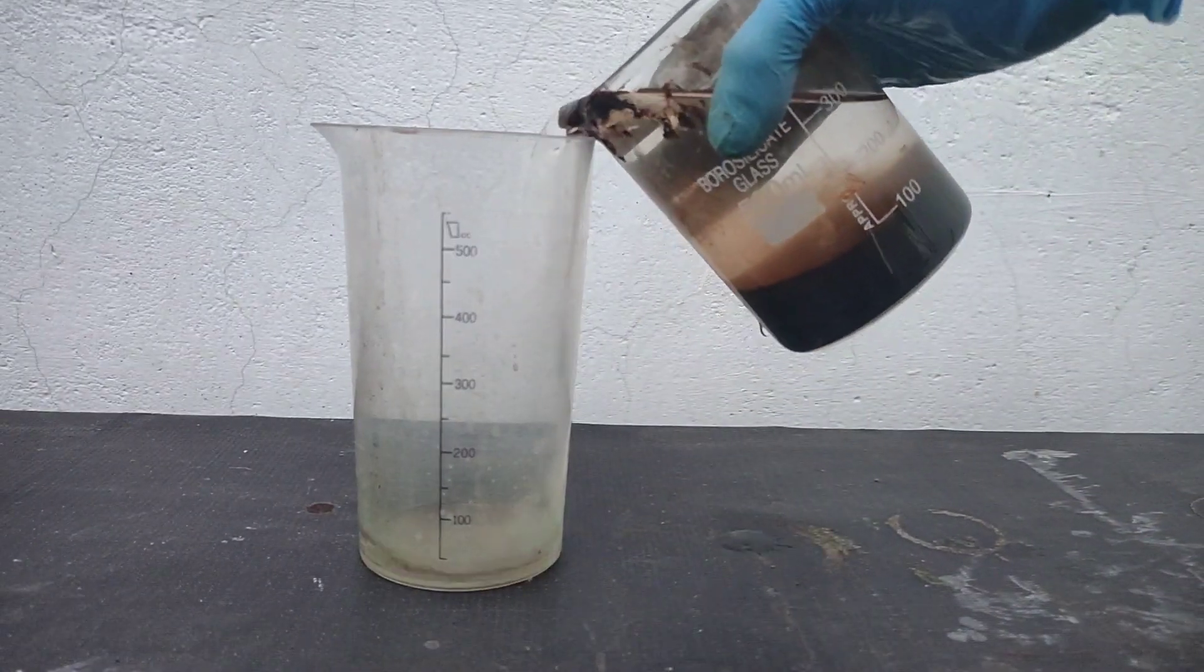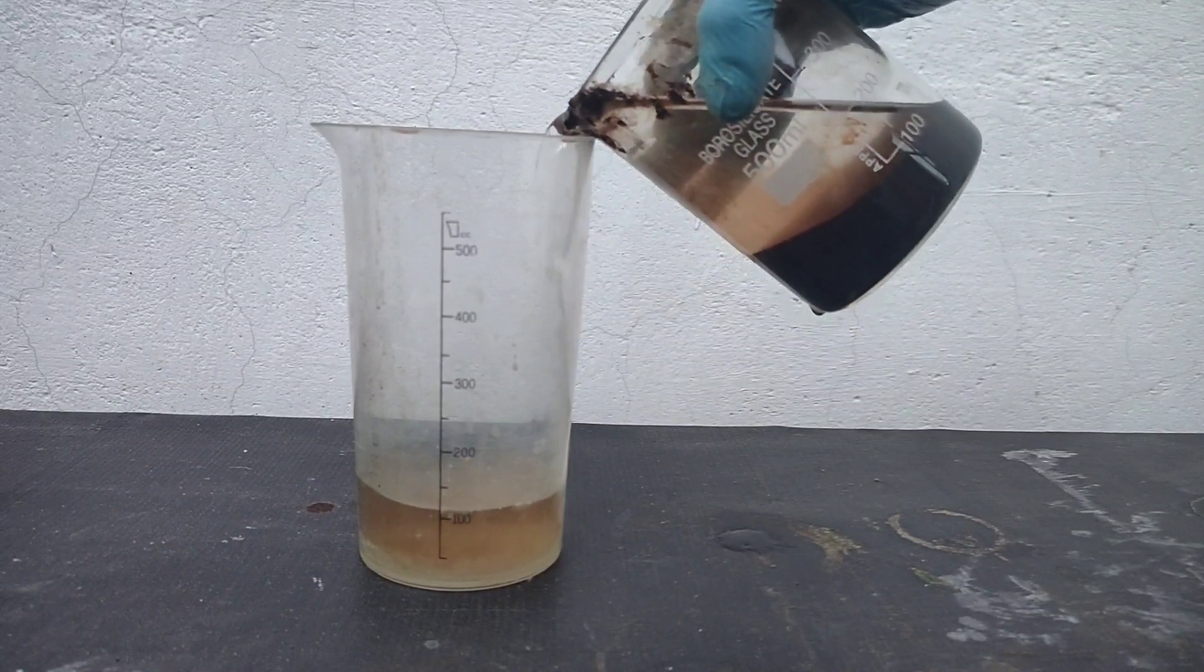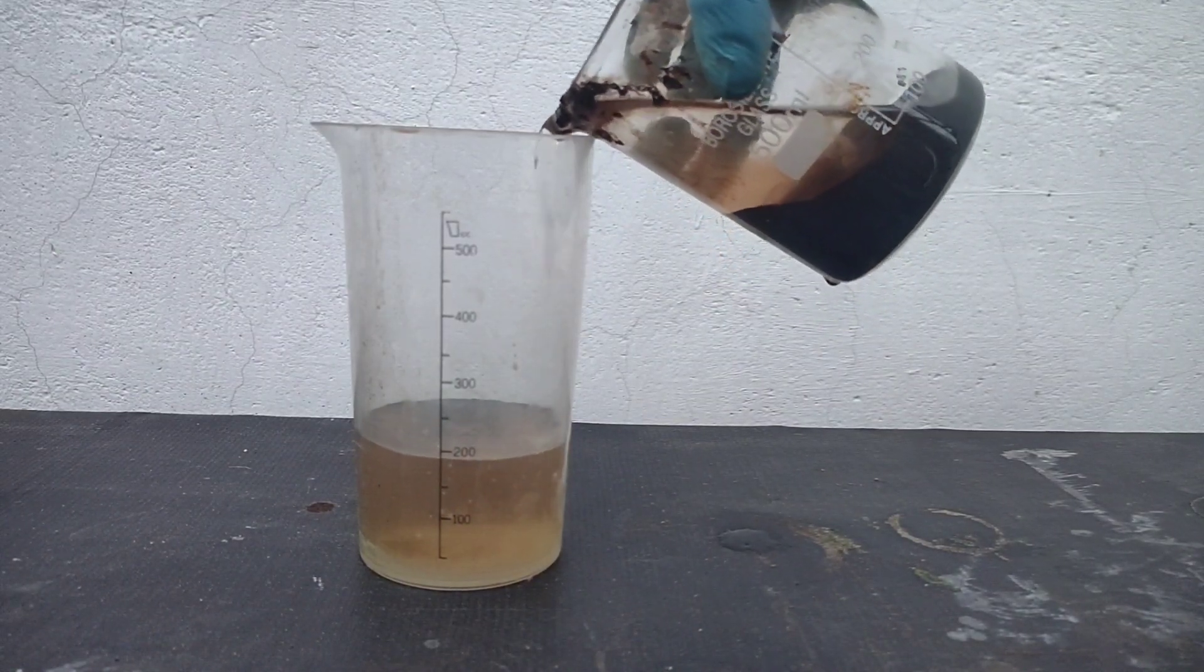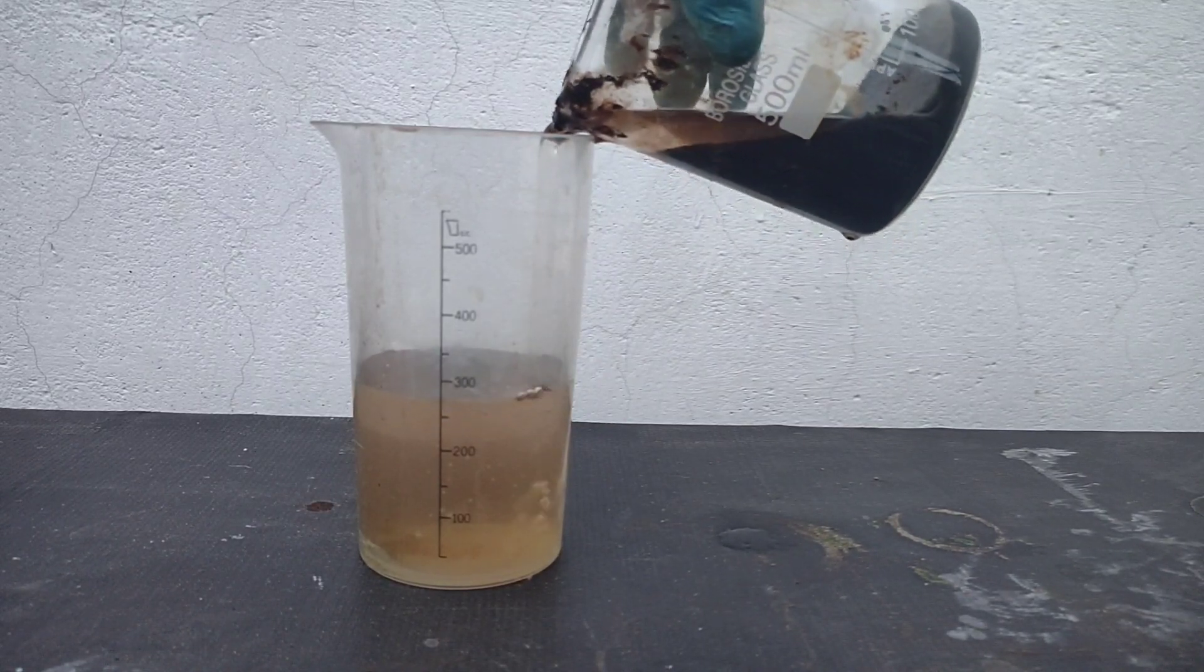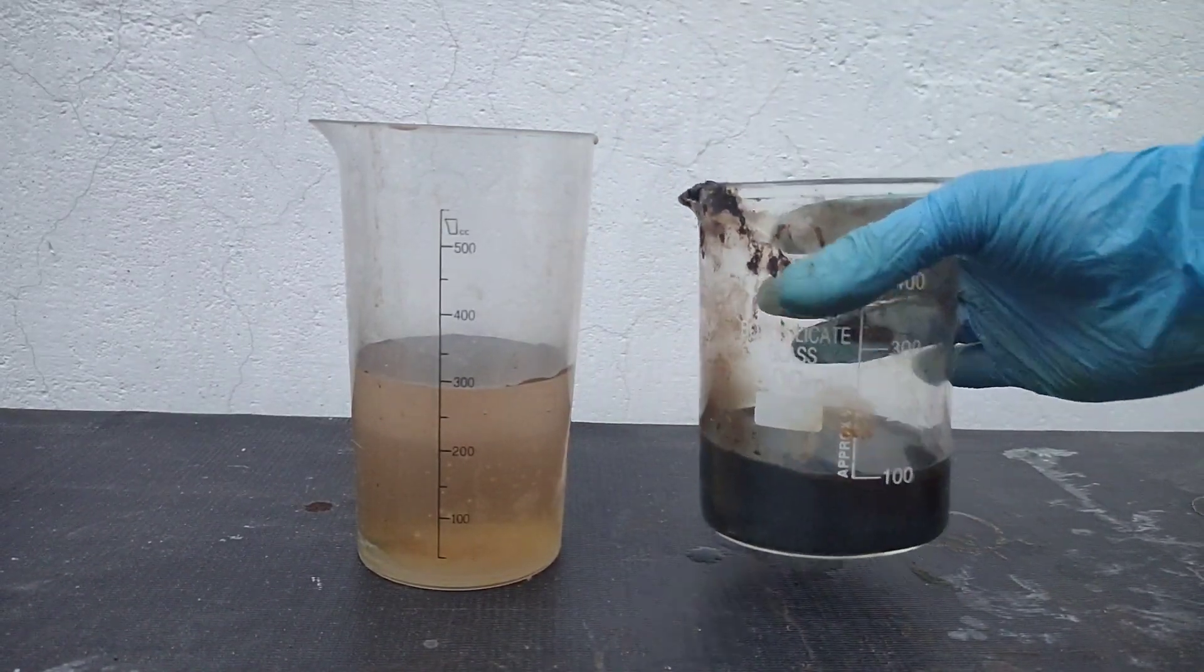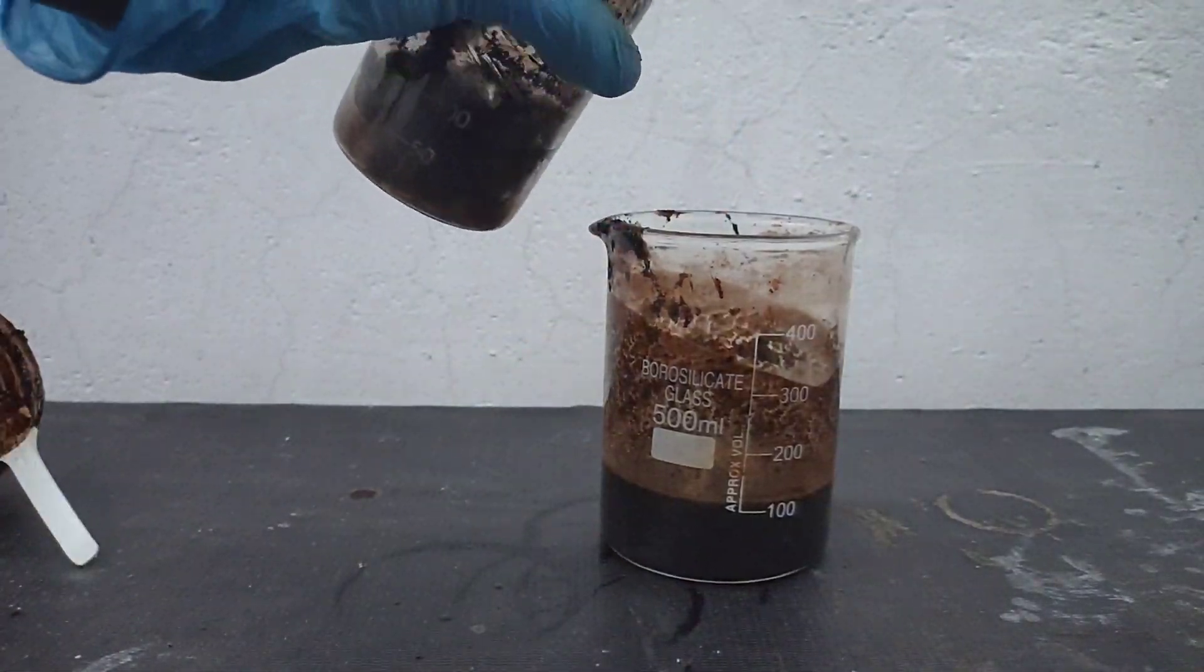With the leftover suspension I added water, let it sediment and decanted the supernatant liquid. I repeated this washing step 3 times to remove the soluble salts. Then I combined the washed slurry with the washed precipitates.